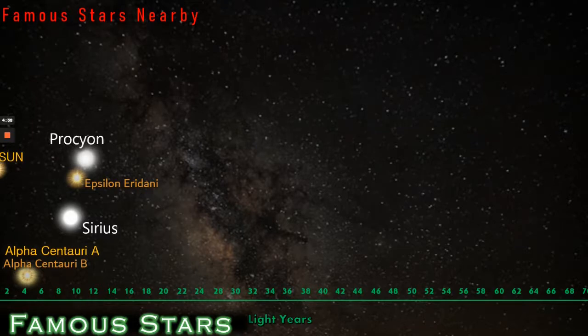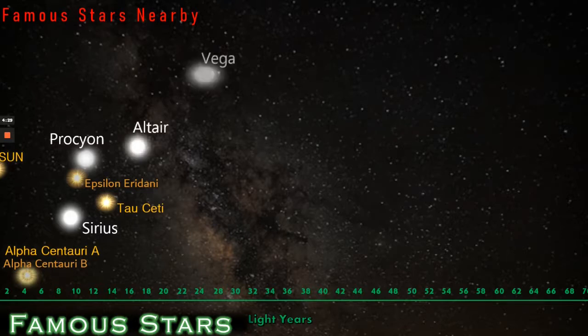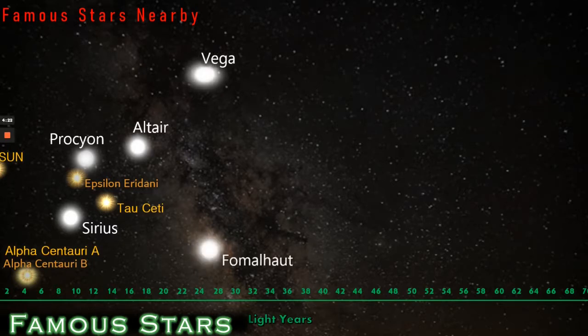F-class star of Procyon follows and then we have the G-type star of Tau Ceti which is actually the nearest single G-class star after the sun. Next follows Altair and then the strange egg-shaped Vega, the standard bearer star and the southern hemisphere's Fomalhaut both at a roughly 20-25 years distance.